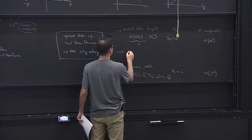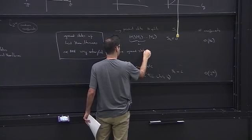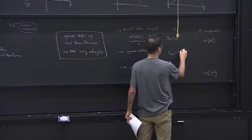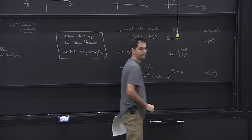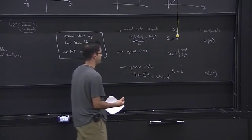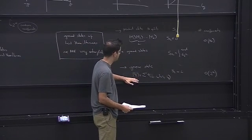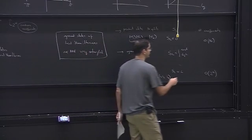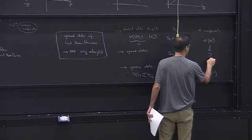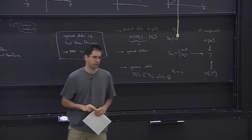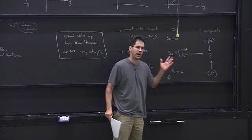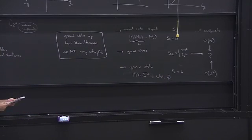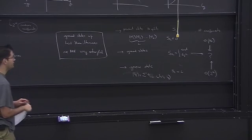The big question we will answer next week: what does this imply for computational complexity? Does the fact that ground states have only a small amount of entanglement mean we can find an efficient way of describing them? Next week we'll answer this positively — yes. Tensor networks will be the way of exploiting this particular structure of entanglement.